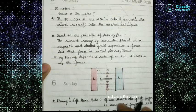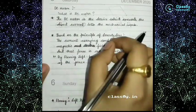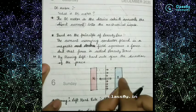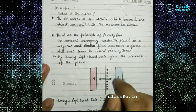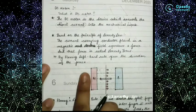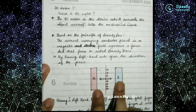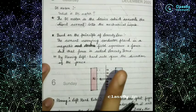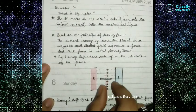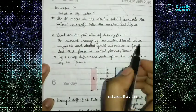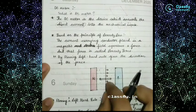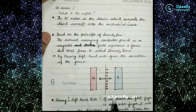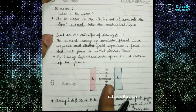This DC motor is based on the principle of Lorentz law. Lorentz law states that a current-carrying conductor placed in a magnetic field — you can see there are two magnets with field moving from north to south — whenever a conductor is carrying a current and is placed in a magnetic field, it experiences a force.